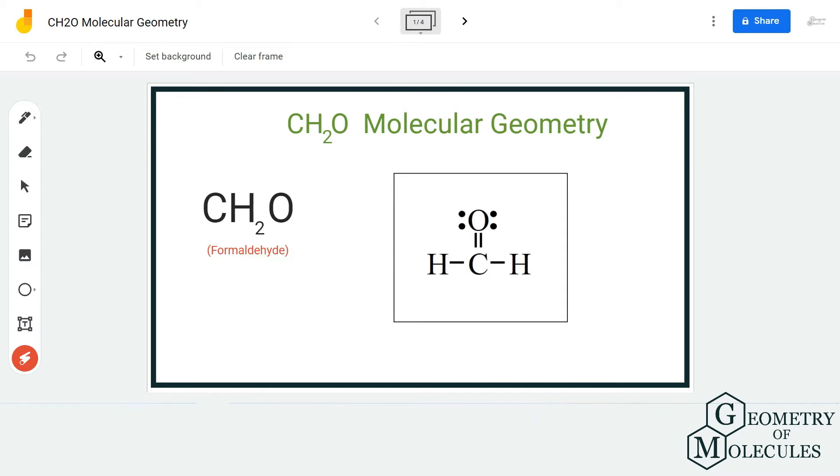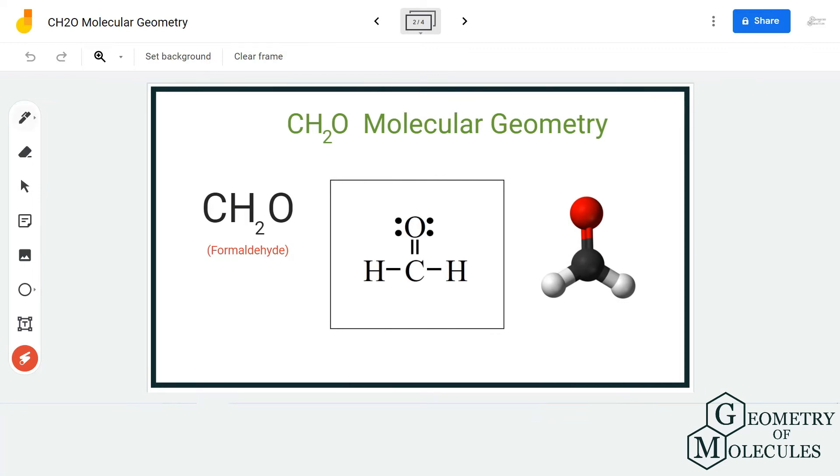So here, as you can see, the Lewis structure of CH2O has carbon in the center and it is forming bonds with two hydrogen atoms and one oxygen atom. And if you look at the structure in 3D, you can determine that it has a geometry of trigonal planar because there are three atoms that are bonding with carbon.